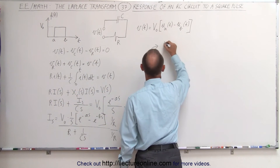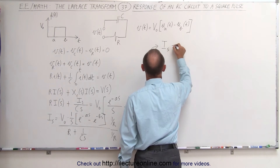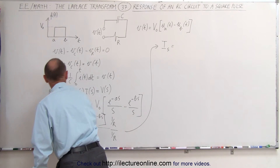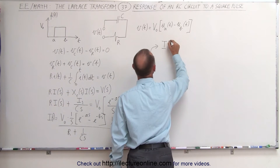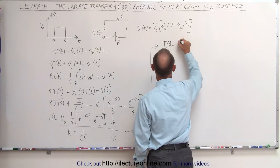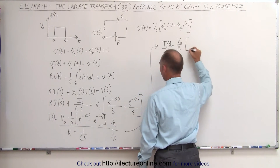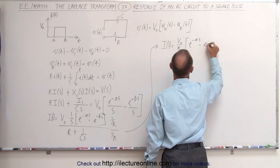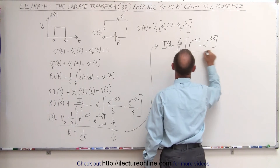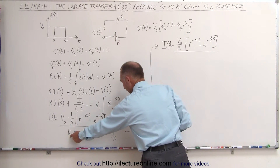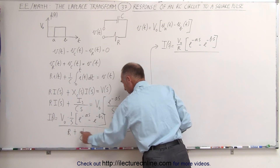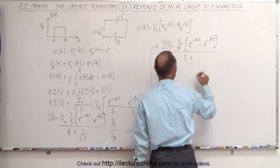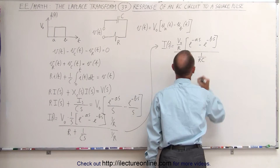I in the S domain is equal to V sub nought over R times the shifts in the frequency domain — E to the minus A·S minus E to the minus B·S — divided by S plus 1 over R·C, after the R's cancel and the S terms simplify.